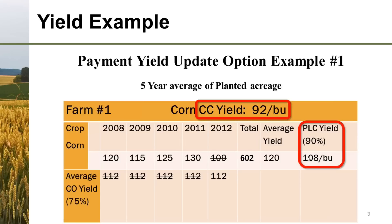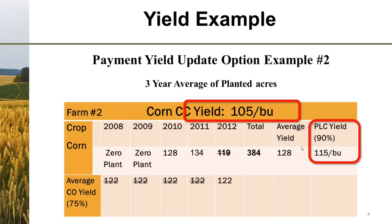In the second example, it's 105 versus 115, so you'd want the 115. What this slide shows is we exclude zero-planted acres, so it's only a three-year average for 2010, 2011, and 2012, again using a substitute yield. In this case the 122 is larger than 119. If we had zero plantings for four years out of five and only one year with corn planted, then the simple average would be a one-year average. We do exclude zero plant years.